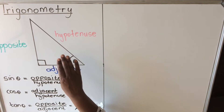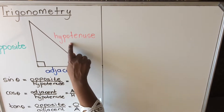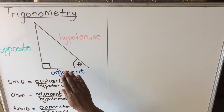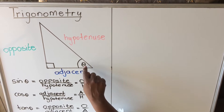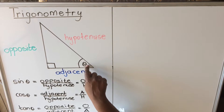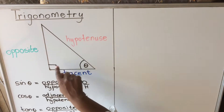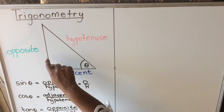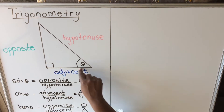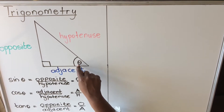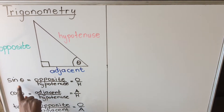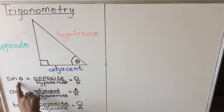In a triangle we have three sides. The side opposite the 90 degrees is called the hypotenuse. We then pick an angle — we call it theta. The line opposite theta is called the opposite side, and the line next to theta, forming part of that angle, is called the adjacent side.